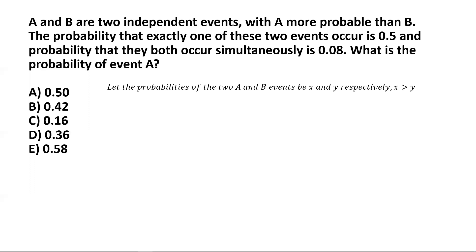Next, we take the help of a Venn diagram to better understand what those probabilities given in the problem mean — specifically the probability of simultaneous occurrence of both events and the probability that exactly one of these two events occurs. What do those probabilities actually mean in terms of the Venn diagram?